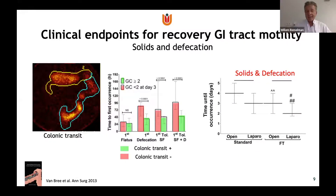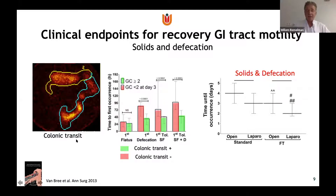Regarding the proper clinical endpoint for GI tract recovery, as part of the LAVA study conducted around ten years ago — a randomized trial comparing four groups of open versus laparoscopic surgery with enhanced recovery versus standard care — we assessed colonic transit in different patient groups. We found that positive colonic transit was best correlated with the combination of the ability to tolerate solids and having defecation. This combination is the best clinical endpoint indicating GI tract recovery for use in studies and in practice.